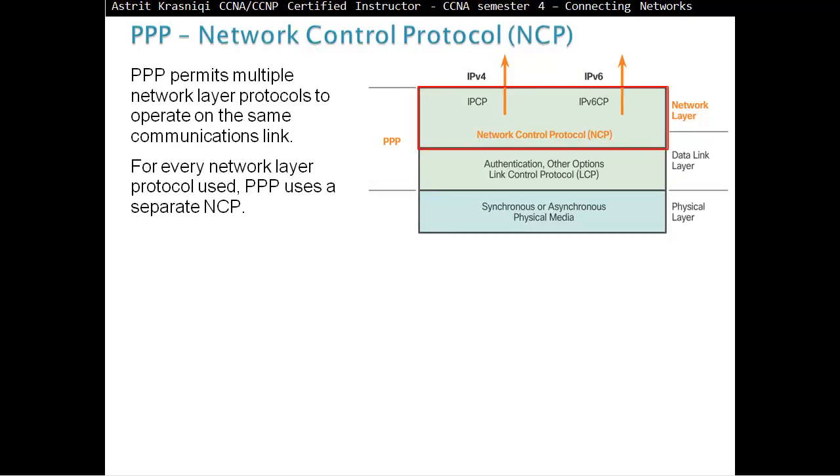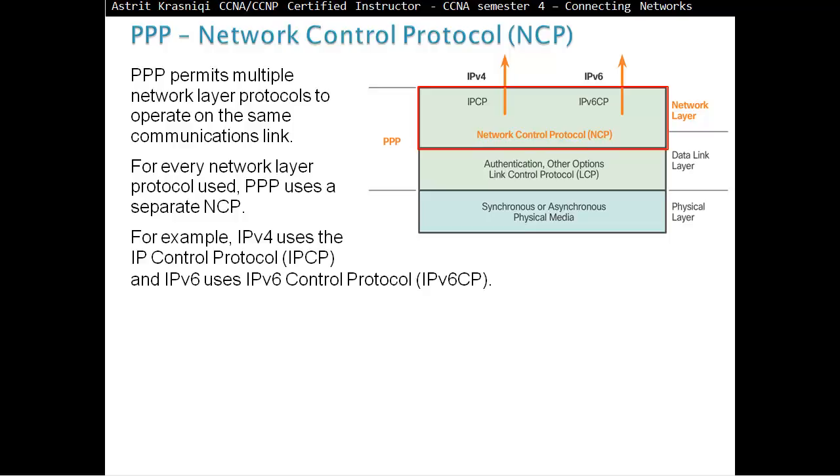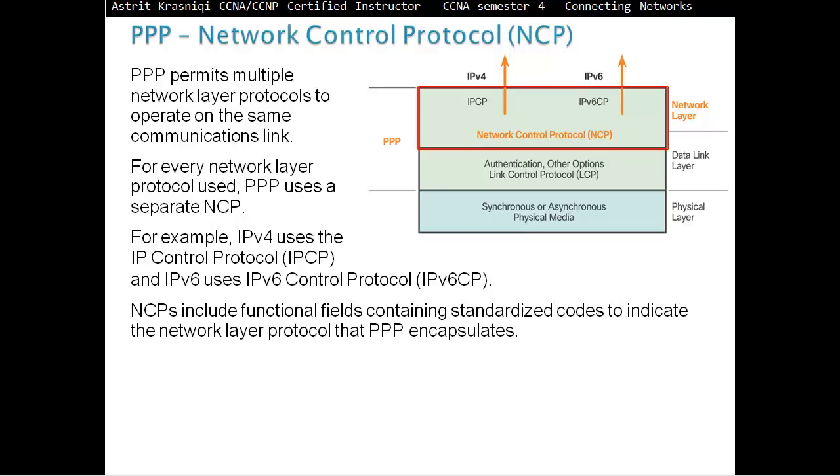Network Control Protocol, or NCP. PPP permits multiple network layer protocols to operate on the same communication link. For every network layer protocol, PPP uses a separate NCP. For example, IPv4 uses IP Control Protocol, IP-CP, and IPv6 uses IPv6 Control Protocol, or IPv6-CP. NCPs include functional fields containing standardized code to indicate the network layer protocol that PPP encapsulates.